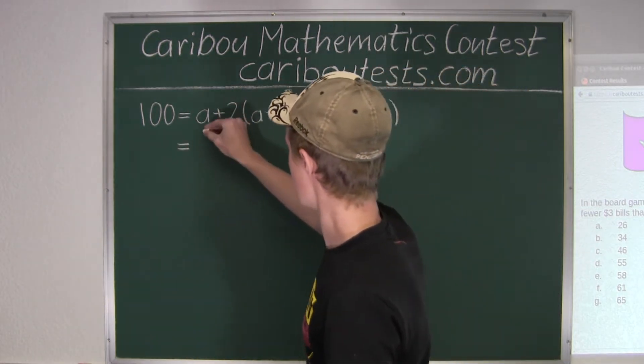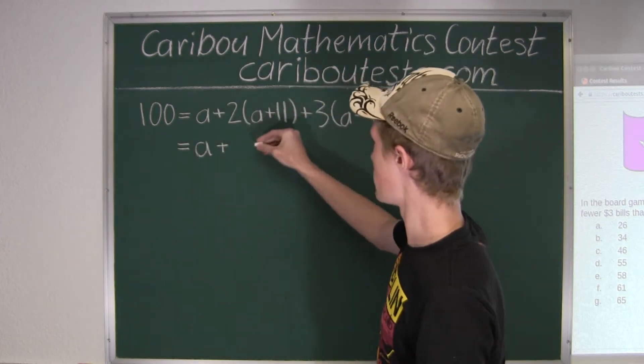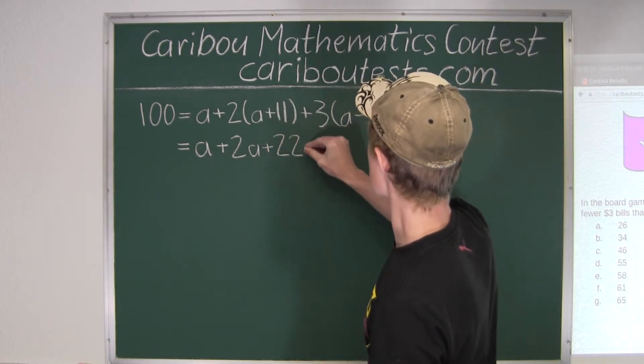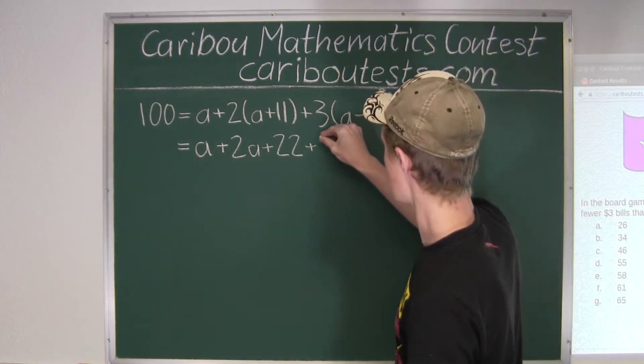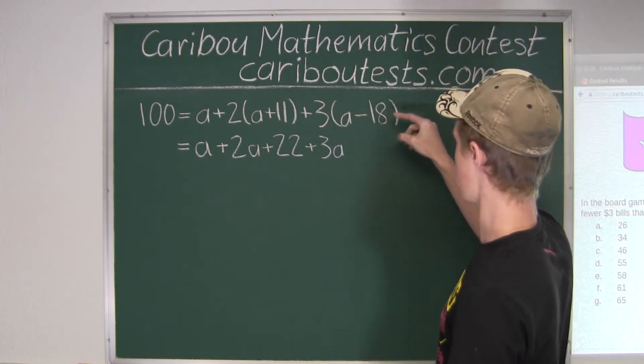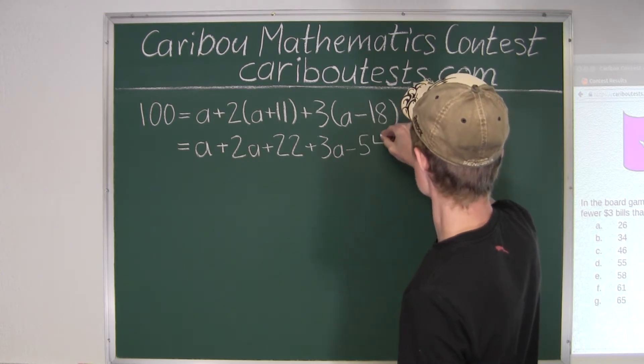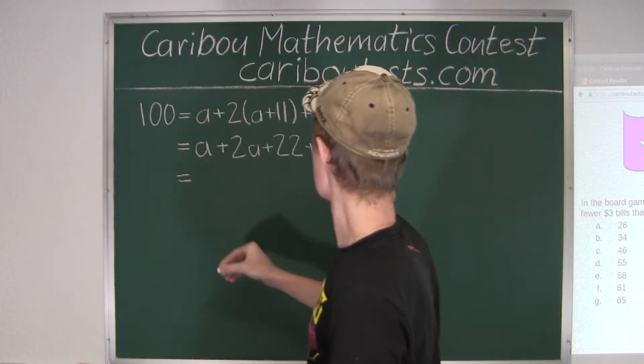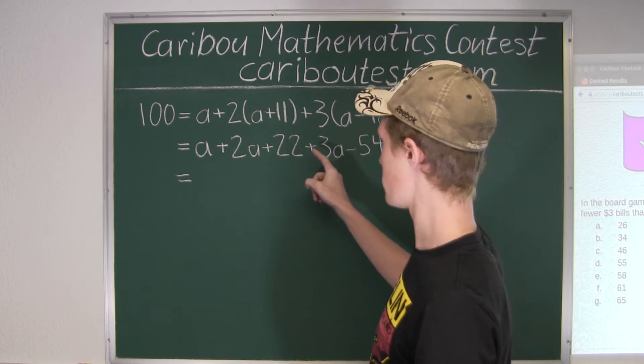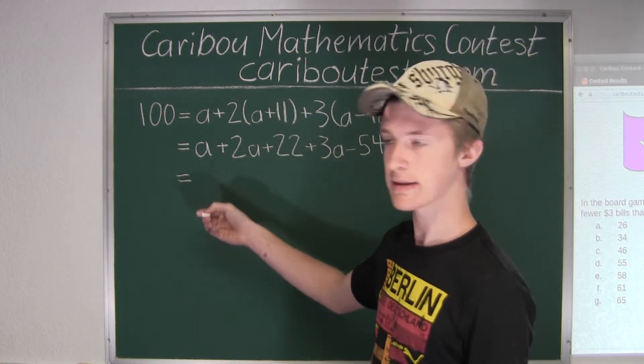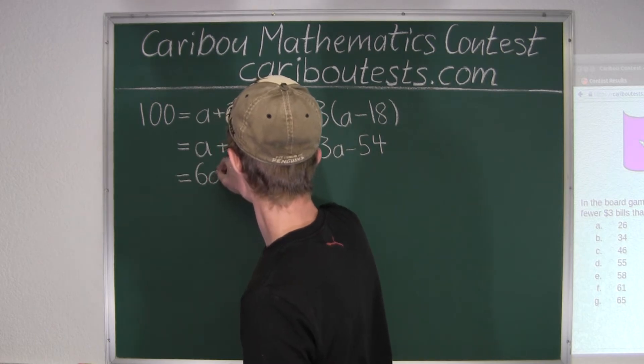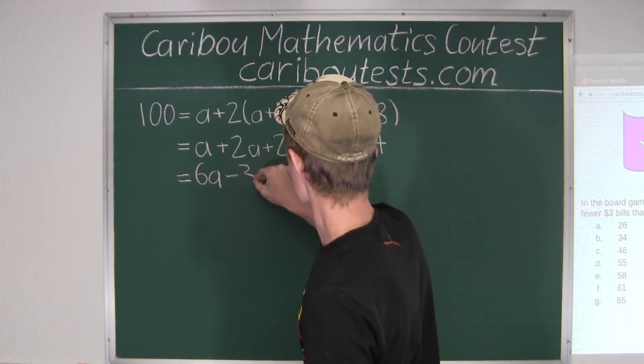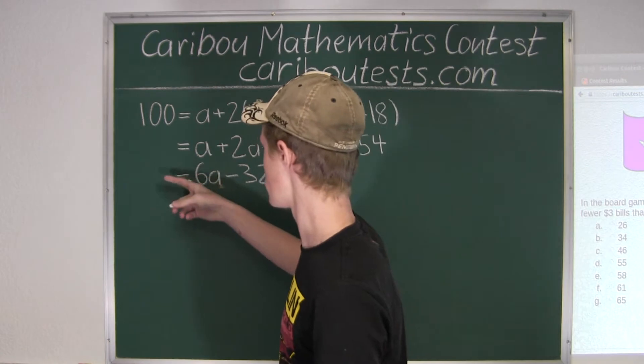Now let's multiply. We have A plus 2A plus 22, plus 3A, and then 3 times negative 18 is minus 54. So what we have is A plus 2A plus 3A, getting all the A's on one side, we have 6A, and then negative 54 plus 22 is negative 32, and that is still equal to 100.